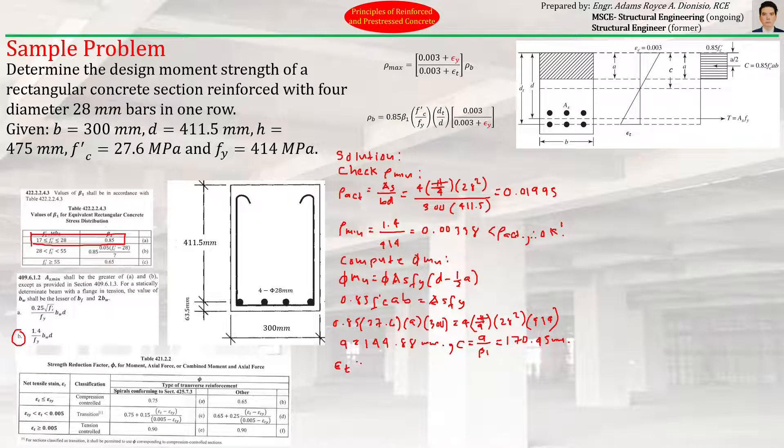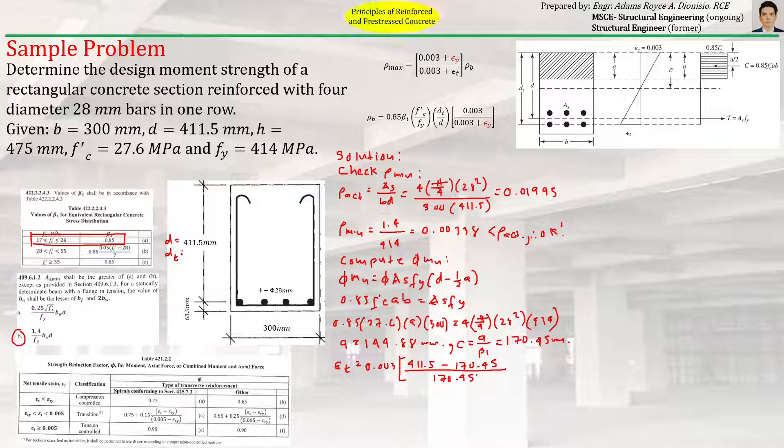With that c, we can now compute for strain in tension steel, εt, which equals 0.003 times (dt - c) over c, which equals d = 411.5. So 0.003 times (411.5 - 170.45) over 170.45. The tensile strain is 0.00424.